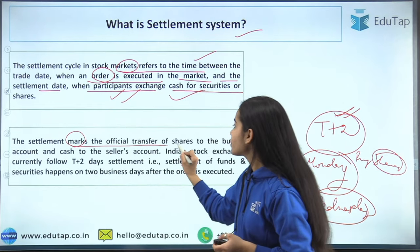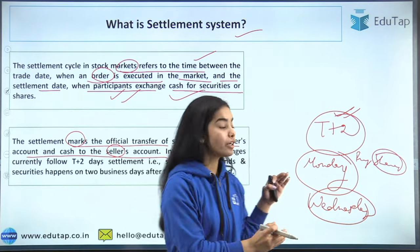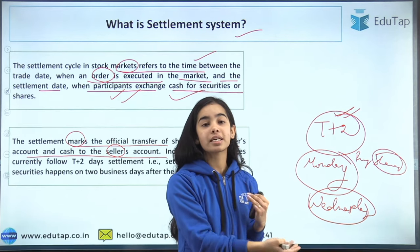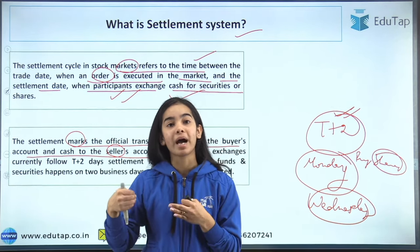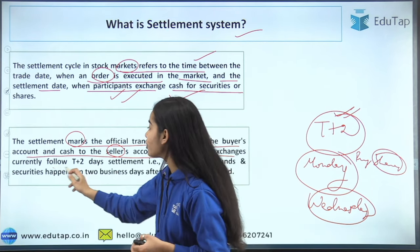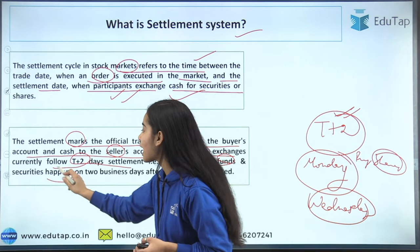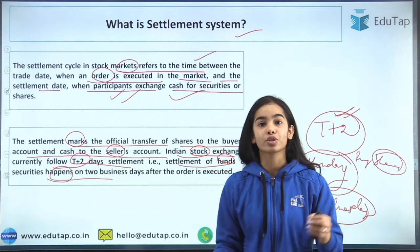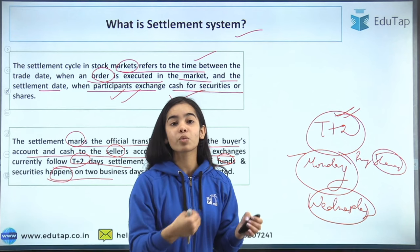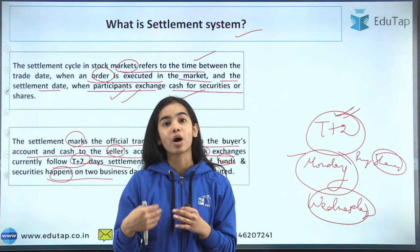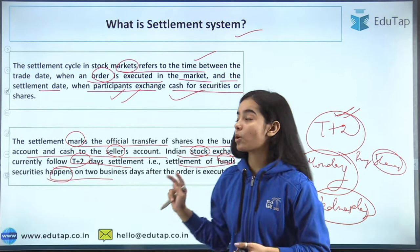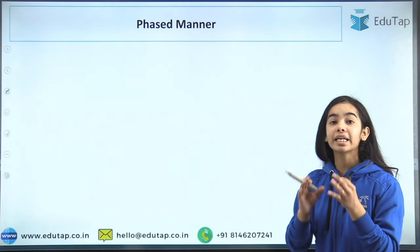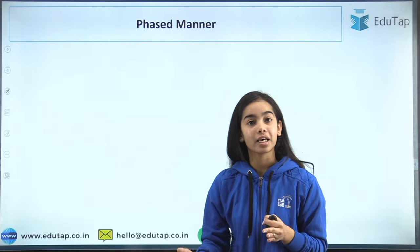The settlement marks the official transfer of shares to the buyer's account and cash to the seller's account. Indian stock exchanges currently follow T plus two days settlement, meaning settlement of funds and securities happens two business days after the order is executed. Now, it has been said that in a phased manner, T plus one will be brought in by NSE and BSE.